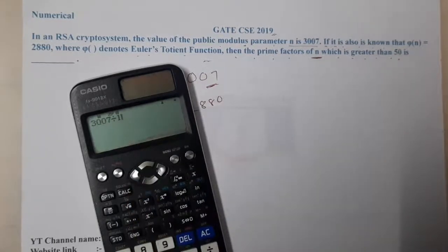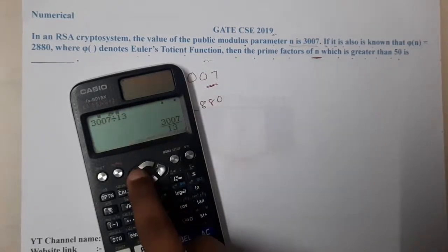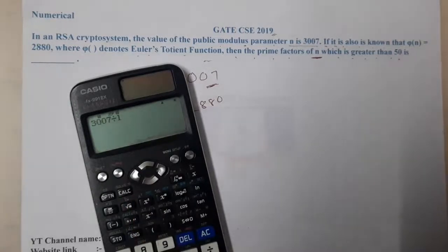After 11, the next prime number is 13, no. So the next prime number after 13 is 17, no. After 17, the prime number is 19.